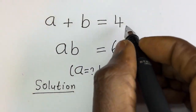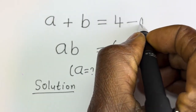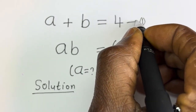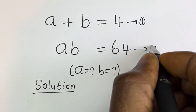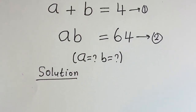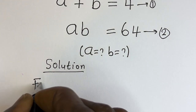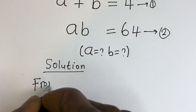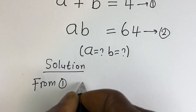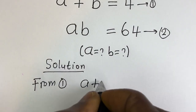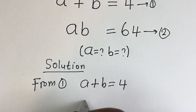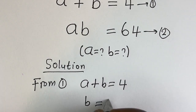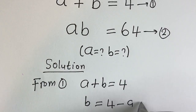A plus B is equal to 4 — let's call this equation 1. AB is equal to 64 — let's call this equation 2. From equation 1, A plus B is equal to 4, so B is equal to 4 minus A. We can call this equation 3.